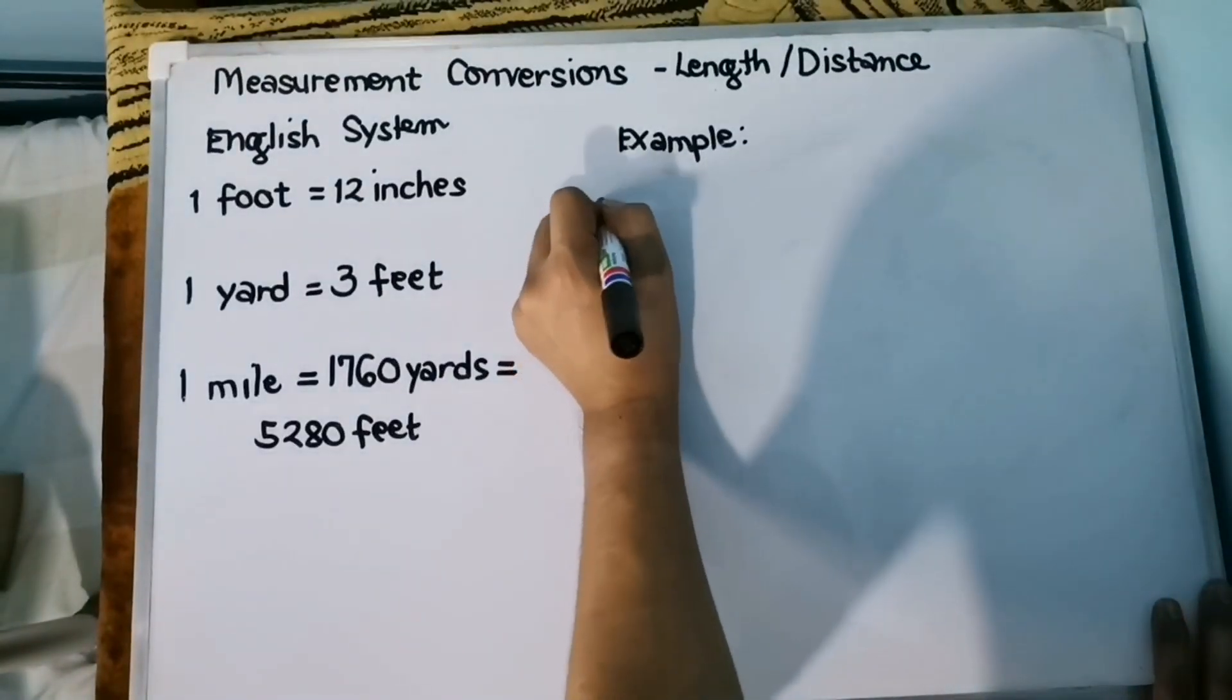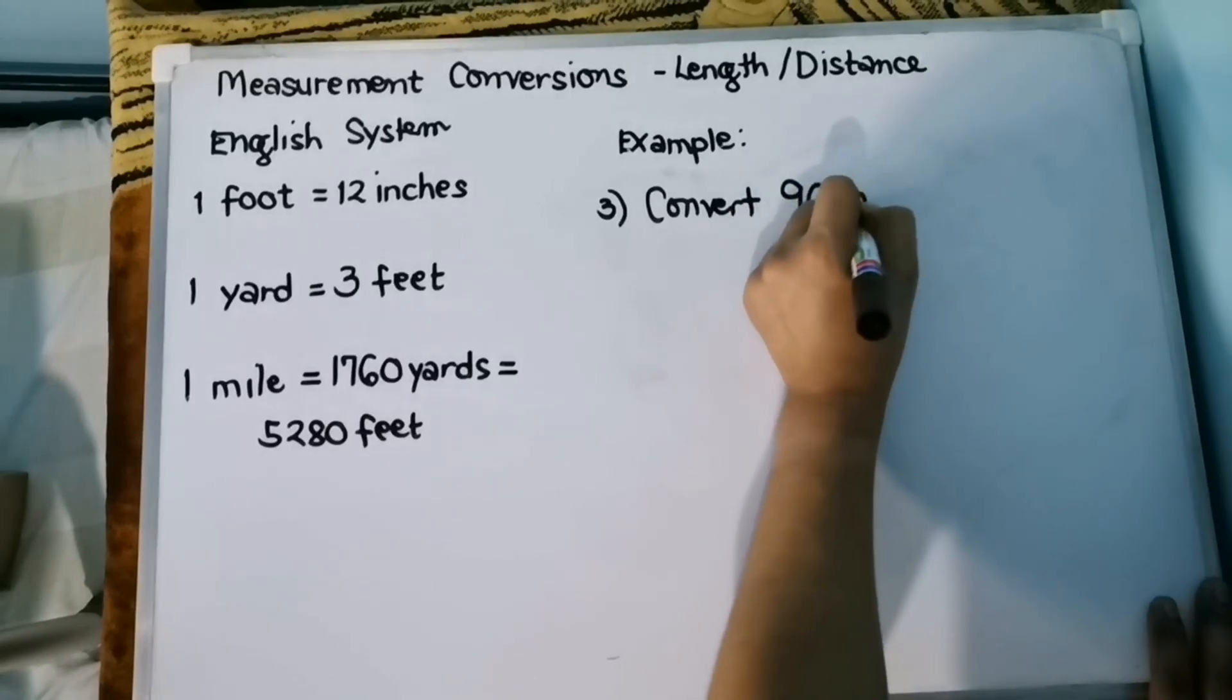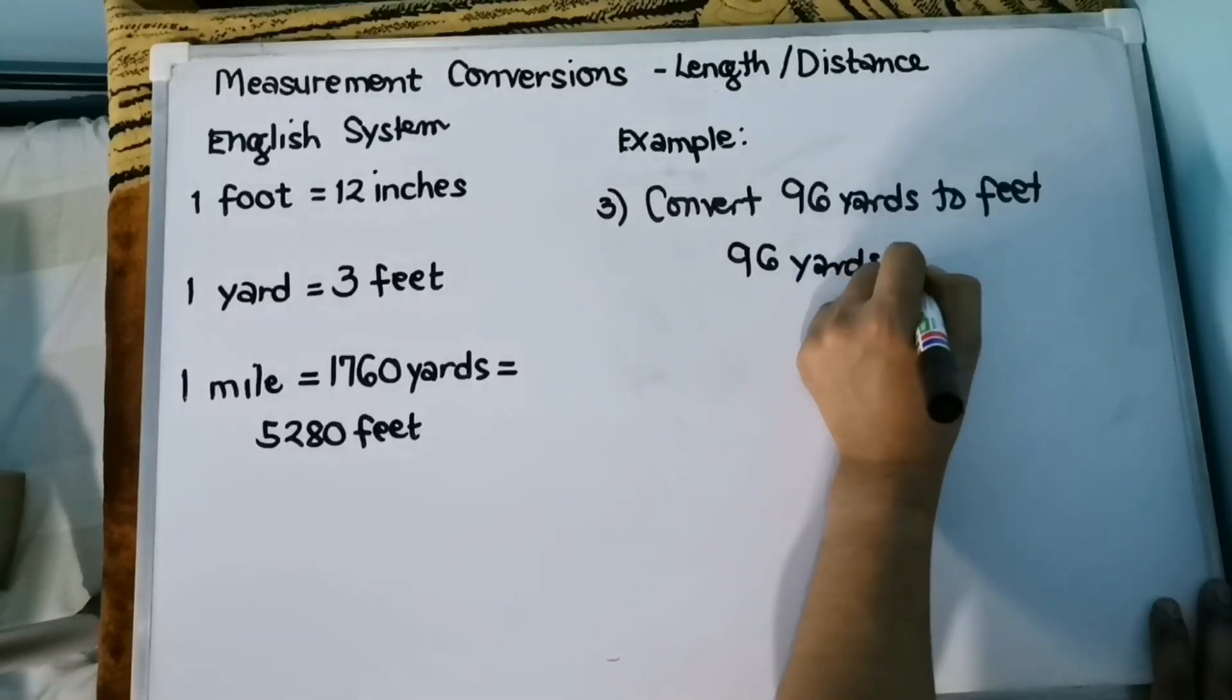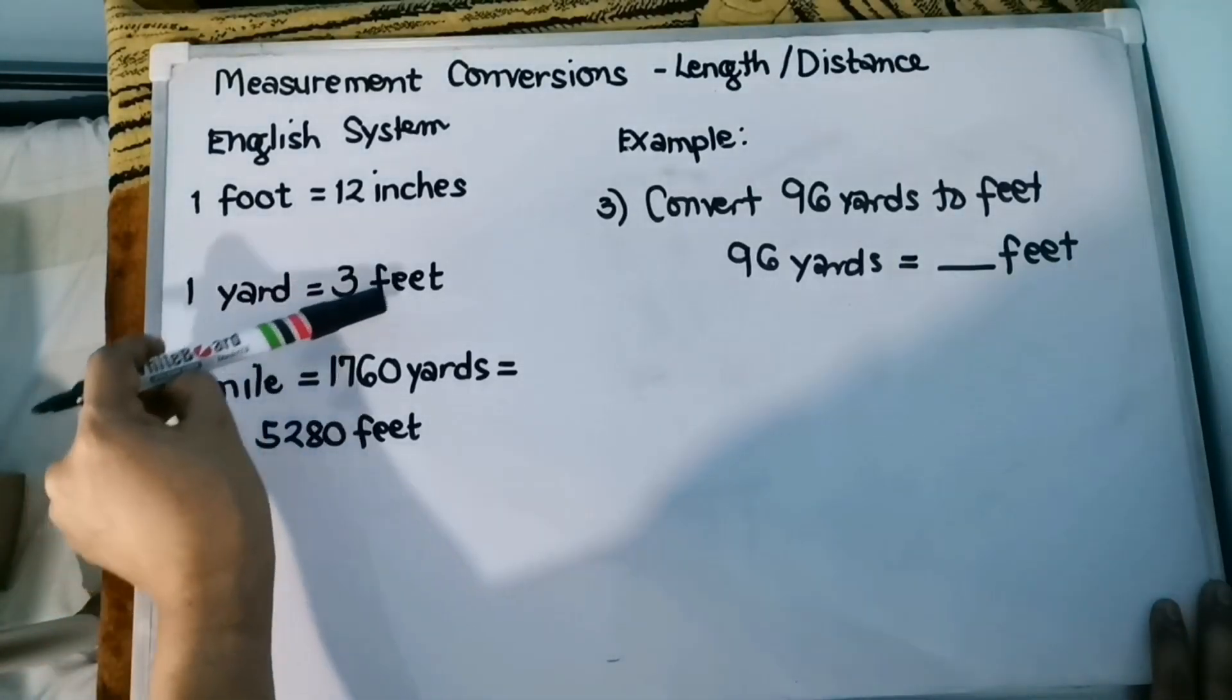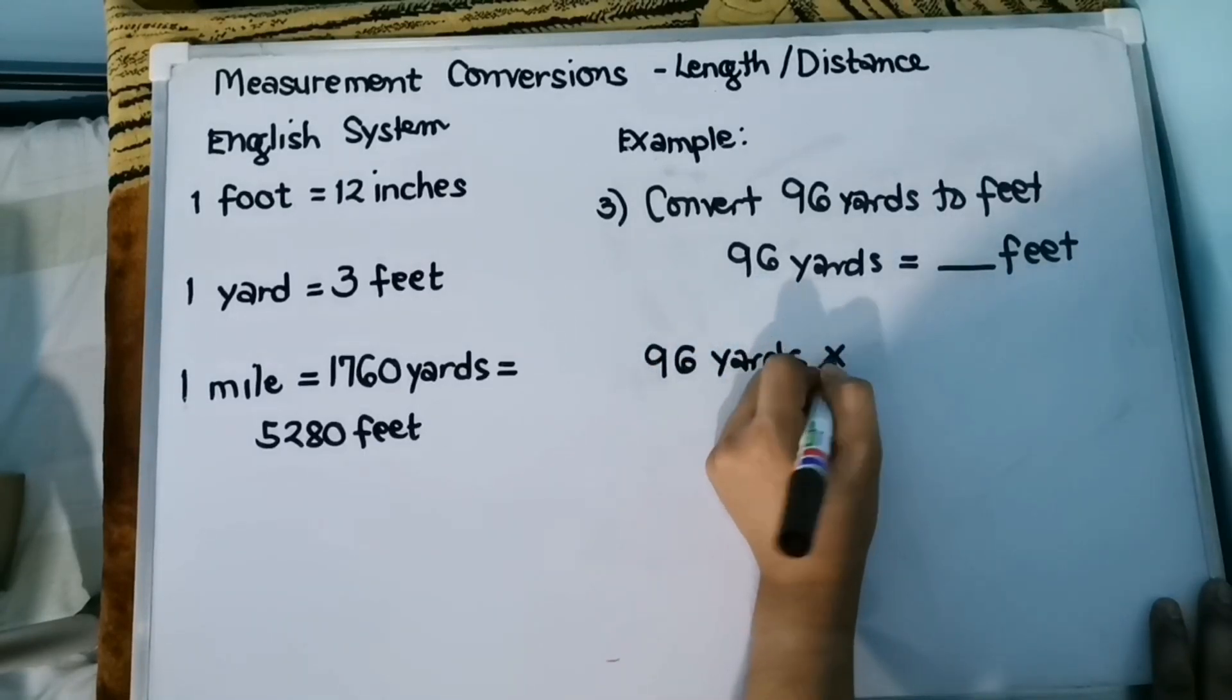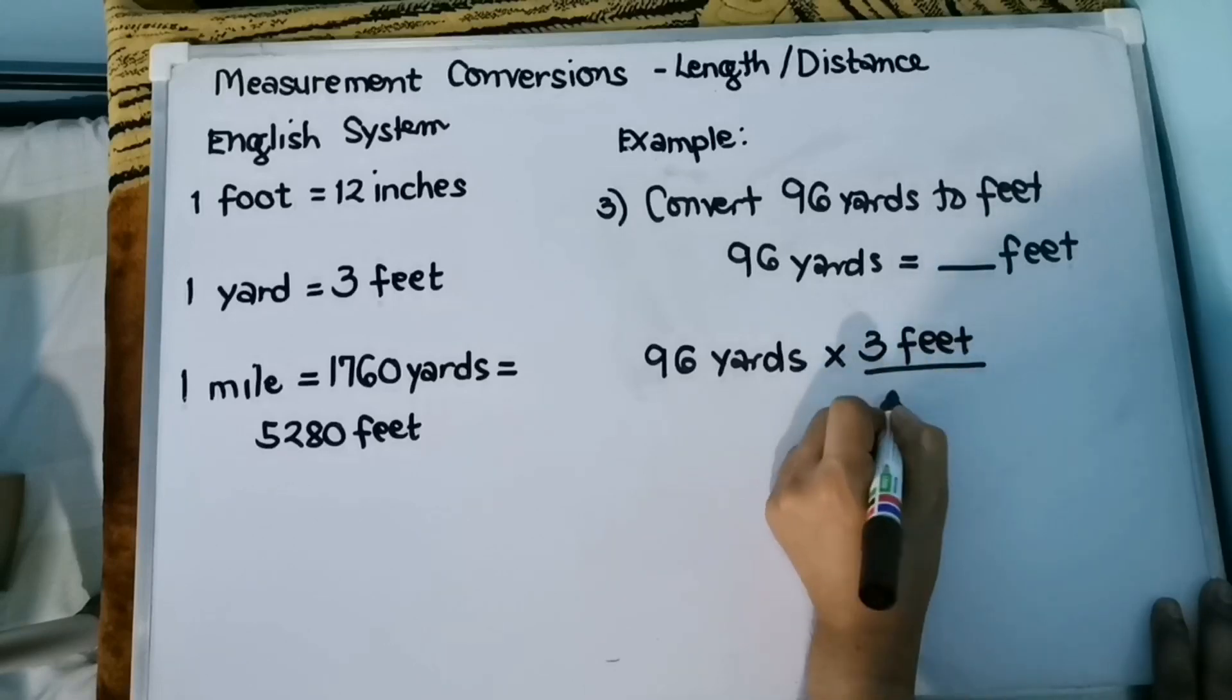And for our last example, convert 96 yards to feet. So that is 96 yards is equivalent to how many feet? Again, we are going to identify the conversion factor to be used, which you will write as a fraction equal to 1. And that is 1 yard is equivalent to 3 feet.